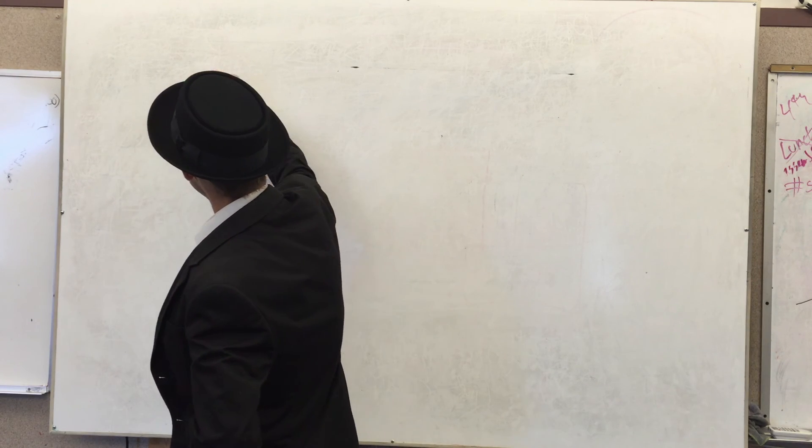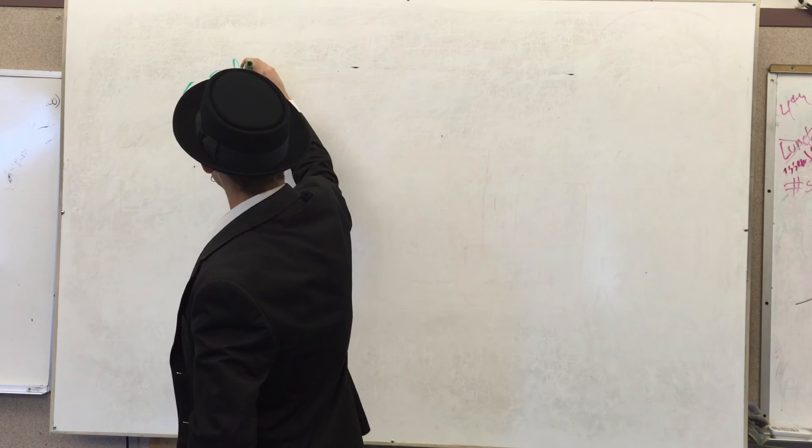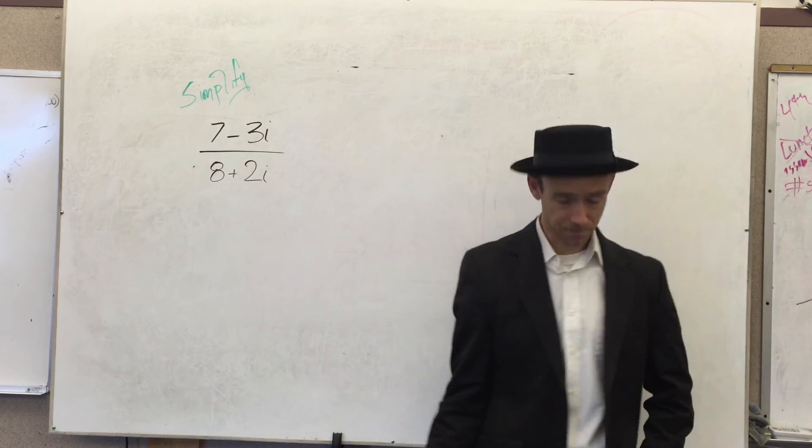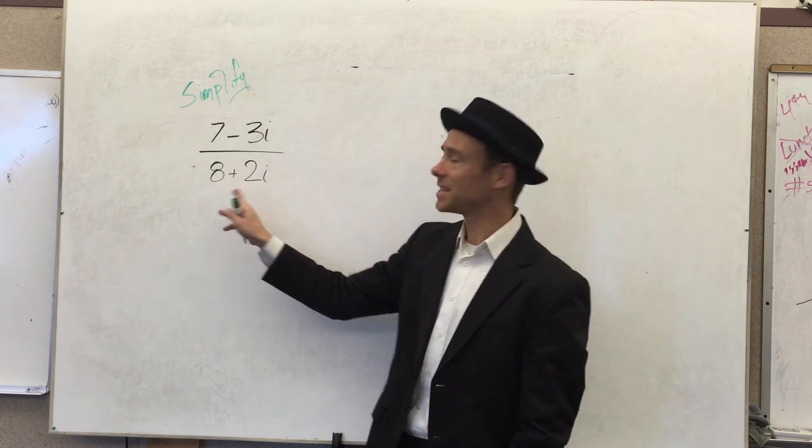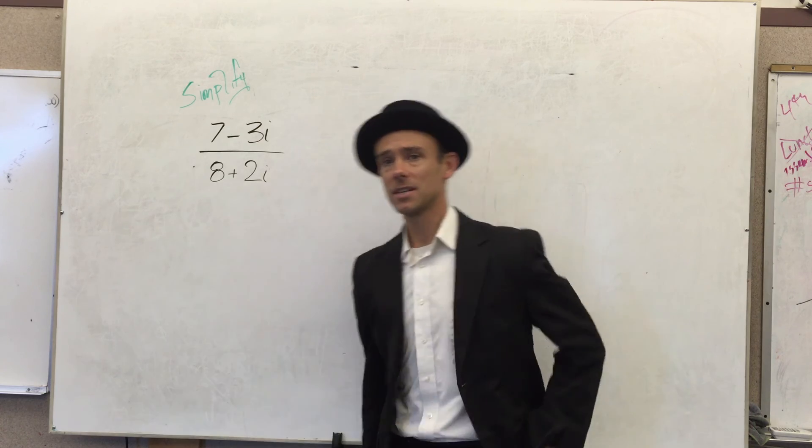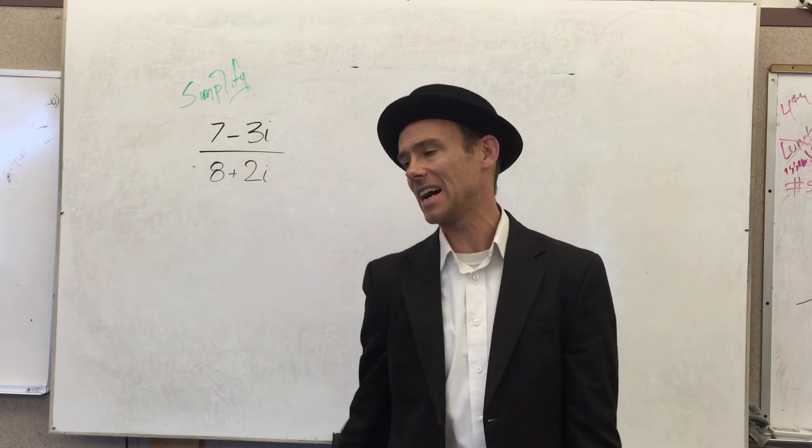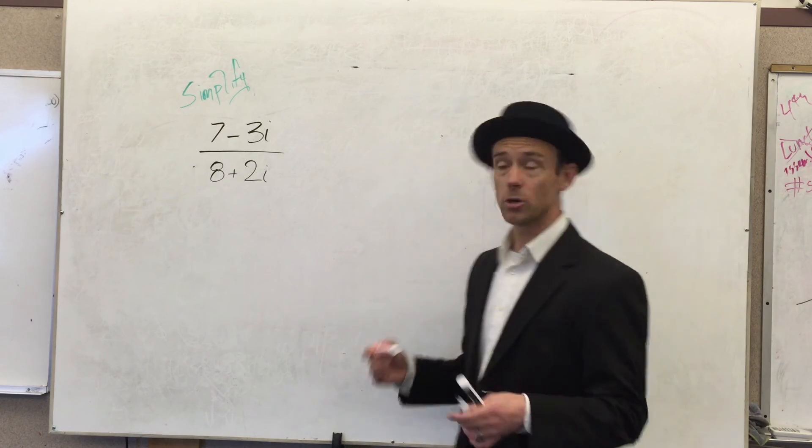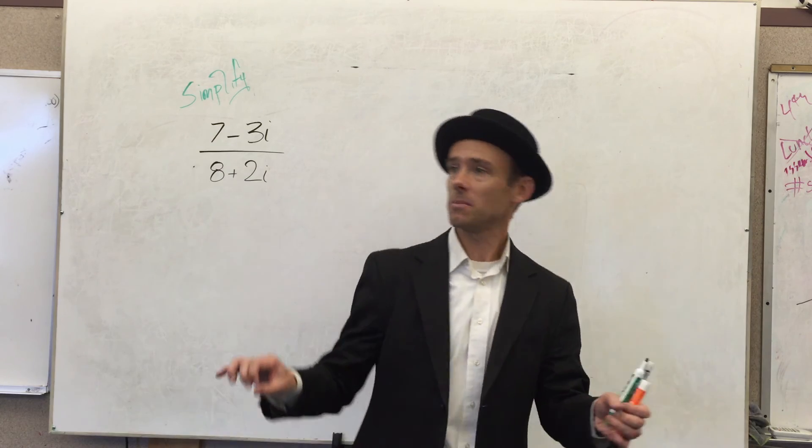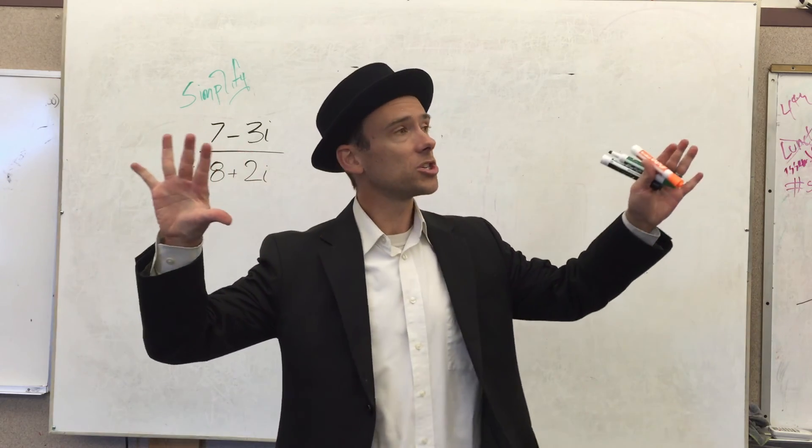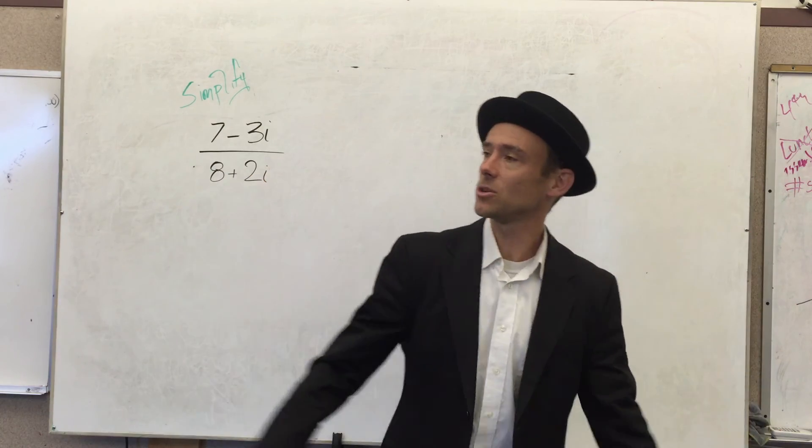So what we mean with the complex number, the imaginary unit, to simplify means we can't have an imaginary unit in the denominator. Ain't gonna happen. And one of the beautiful things about this imaginary unit is it's very easy to make it disappear.